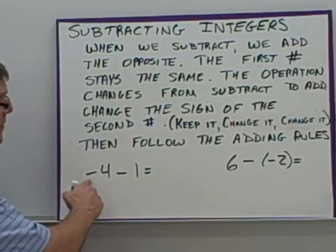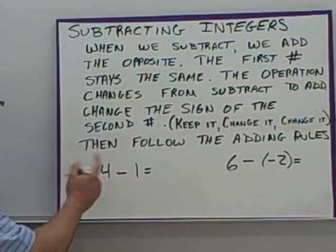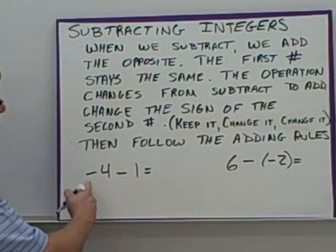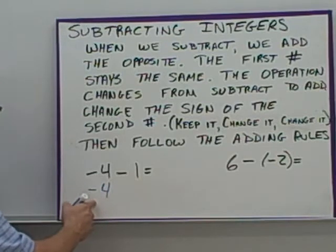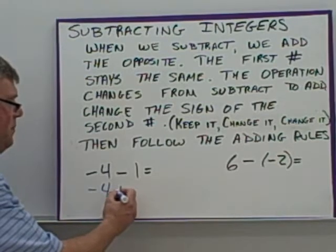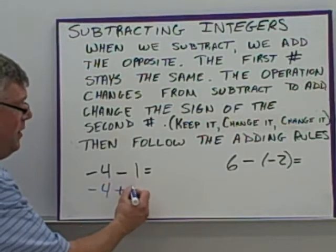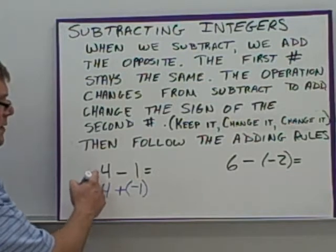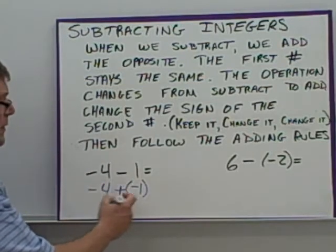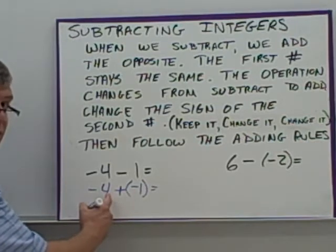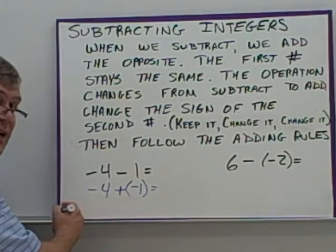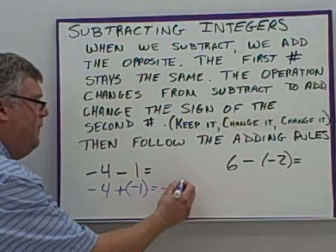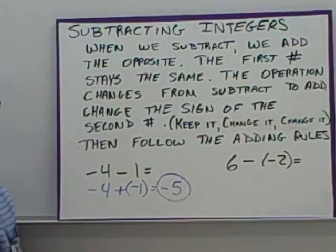Here we have negative 4 minus 1. We're going to change this to an addition problem so we can add the opposite. Negative 4 — the first number stays the same. The operation becomes plus. Instead of positive 1, you're going to have negative 1. Keep it, change it, change it. Adding two negatives: we keep the sign and add the numbers. 4 plus 1 gives me 5, so I have negative 5 for my answer.